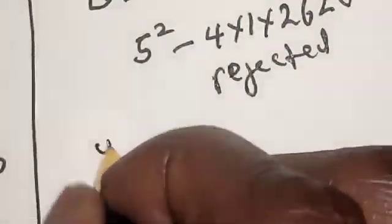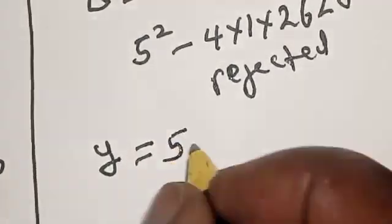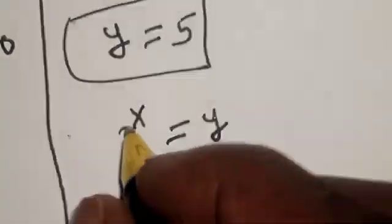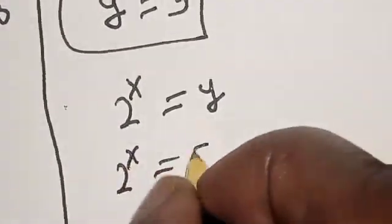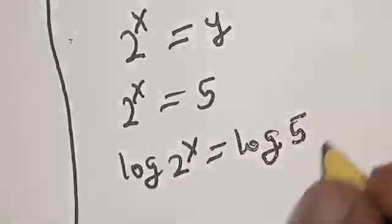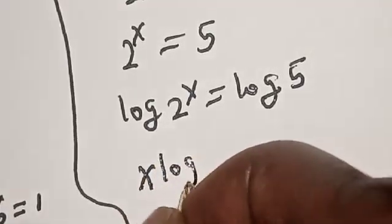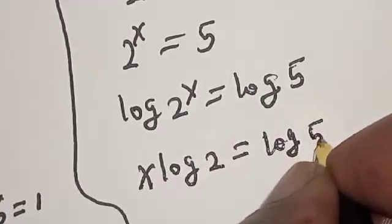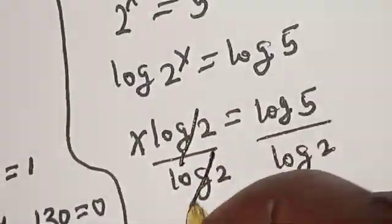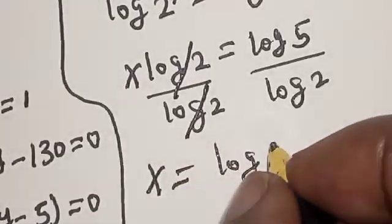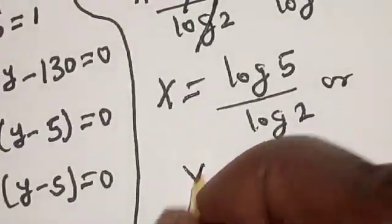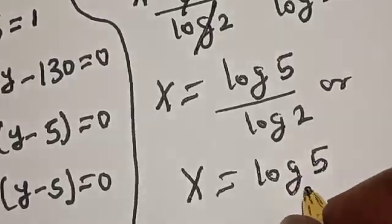The only true solution is y equals 5. Since 2 raised to power s equals y, and y equals 5, we have 2 raised to power s equals 5. Taking the log of both sides: s times log 2 equals log 5. Dividing both sides by log 2: s equals log 5 divided by log 2, or equivalently s equals log base 2 of 5. That is our final answer.